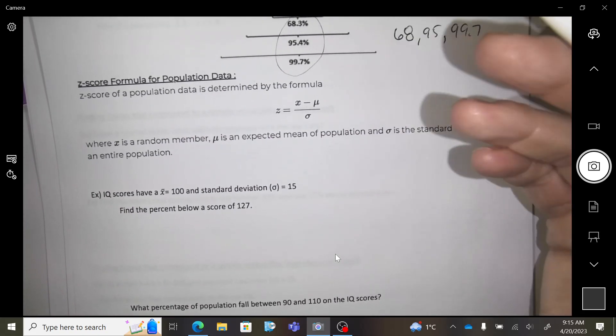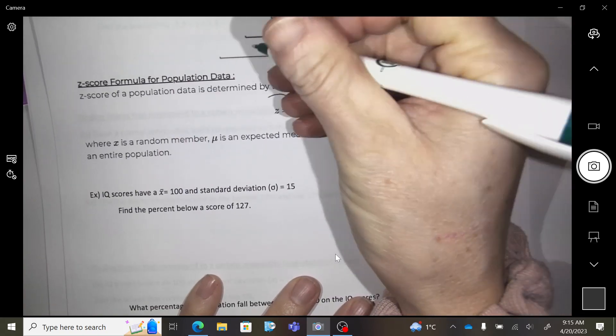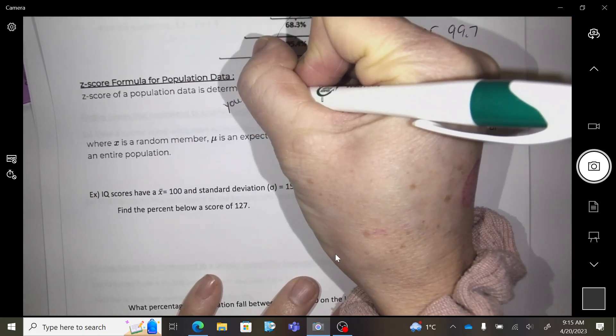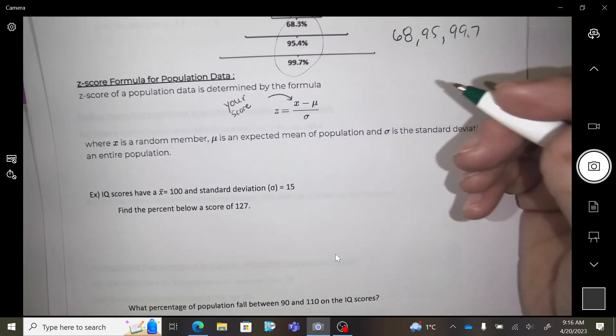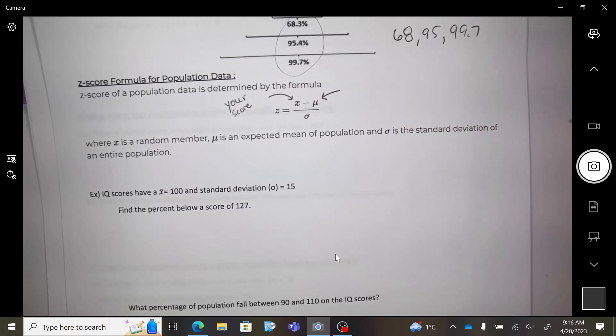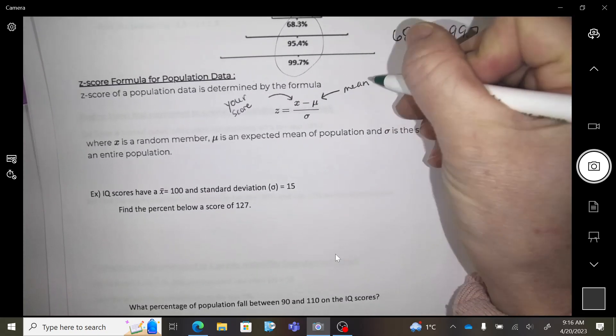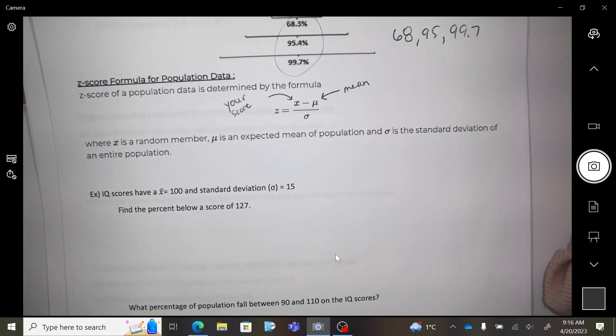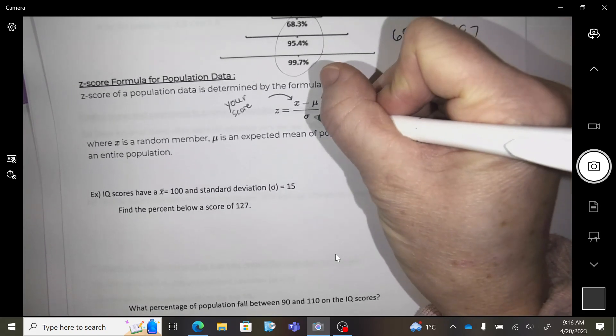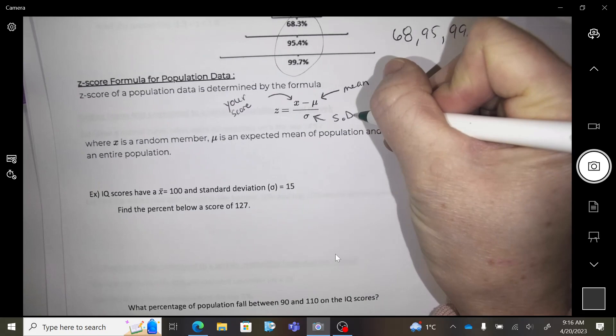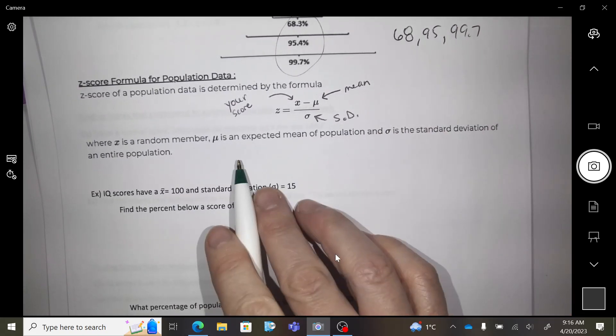Here is the z-score formula. We have x representing your score, your data, whatever data it is. This μ symbol is the mean. You might ask, last time we used an x with a bar over it. There's two symbols: one means the population and one means a sample. The μ with the hook is the standard deviation.